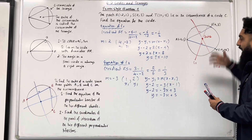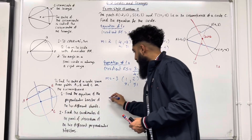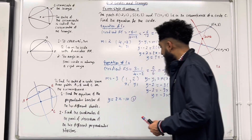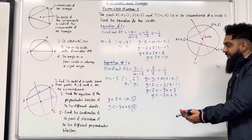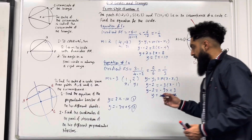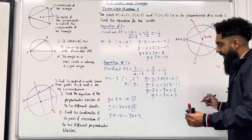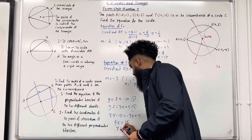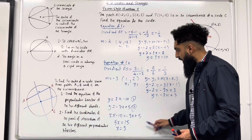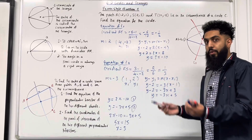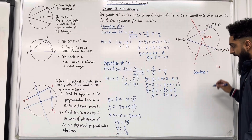Now we want to work out where these two lines intersect — in other words, we want to find the coordinates of the centre of the circle. We solve the simultaneous equations: equation 1, y = 2x − 10, and equation 2, y = −3x + 5. Because both equations represent y, we can equate them. Rearranging gives 5x = 15, hence x = 3. Substituting x = 3 into equation 1: y = 2(3) − 10 = −4. Hence the centre of the circle has coordinates (3, −4).